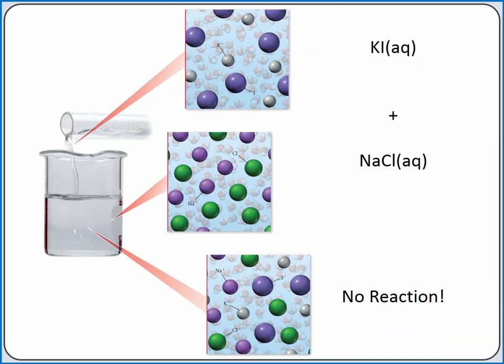If, however, an insoluble ionic compound is not formed, no reaction will occur. For example, if we add together potassium iodide and sodium chloride, our possible ionic compounds after switching partners are potassium chloride and sodium iodide. Since both of these are still soluble ionic compounds, no reaction occurs. The ions all remain in solution.